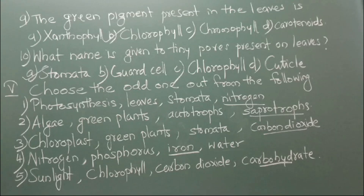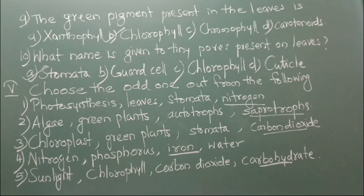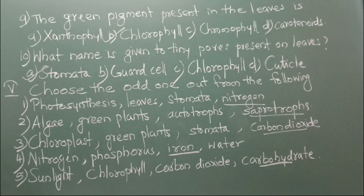Now we will see choose the odd one out from the following. Number 1: Photosynthesis, leaves, stomata, nitrogen. The odd one is nitrogen. Number 2: Algae, green plants, autotrophs, saprotrophs. The odd one is saprotrophs.